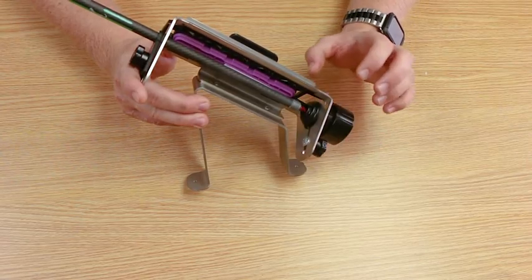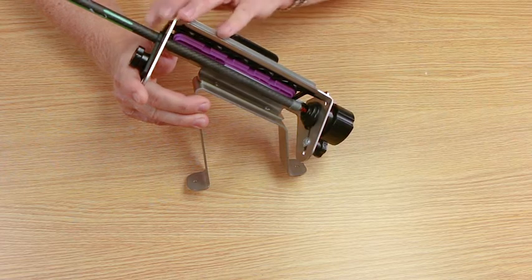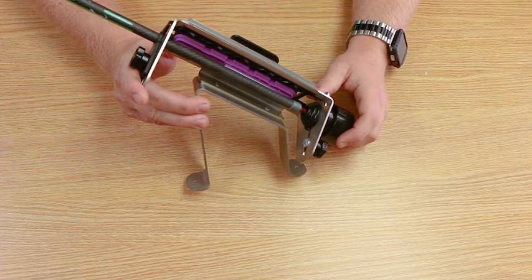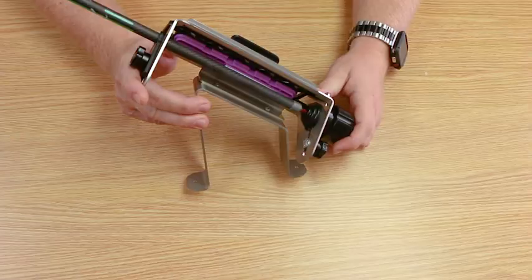Before you begin to fletch, make sure you have your knock receiver and arrow retainer adjusted properly so that you have good contact between your vanes and your arrow shaft.